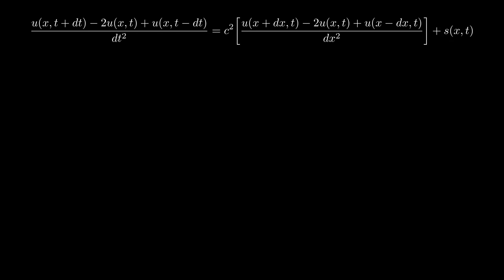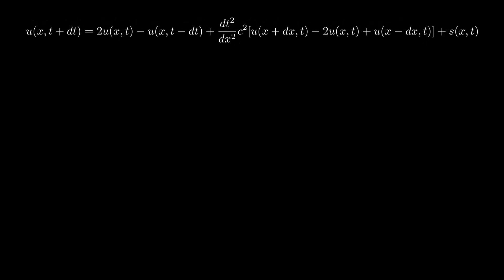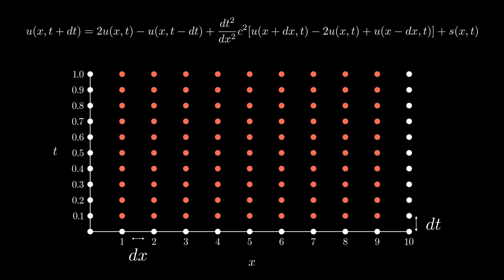Looking back at this discrete version of the PDE, there is only one term that represents the future value of u. Let's keep this on the left hand side and move everything else over to the right. It's important to connect this equation to the numerical grid. I'm going to start at a point where x is equal to 1 and t is equal to 0.2. This corresponds to u of x t plus dt term in the equation.